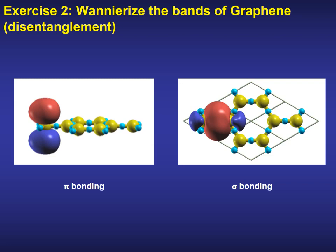As a second exercise, we are going to wannierize the band structure of a metal, in this case graphene. The goal is to plot Wannier functions coming from the pi and the sigma bondings, as shown in this figure here.